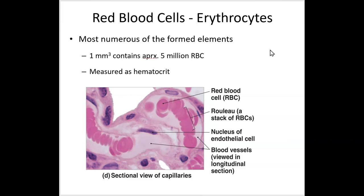One cubic millimeter — the same as a microliter of blood — has about 5 million red blood cells in it. That's a lot of cells, so they're very, very numerous. Whenever you look at a slide of blood, you will see the red cells everywhere.